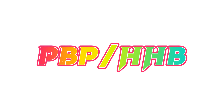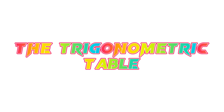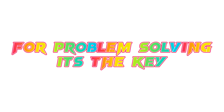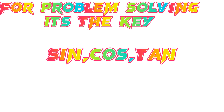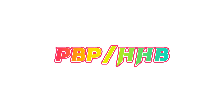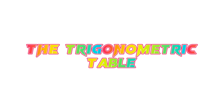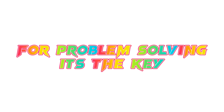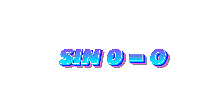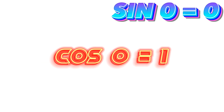Sine, cos, tan — PVP on HHP dot — trigonometric table for problem solving is the key. Sine 0 is 0, cos 0 is 1. Tan 0 is 0, cos 0 is 1. Sine 30 is 1/2, cos 30 is root 3 by 2, tan 30 is 1 by root 3.